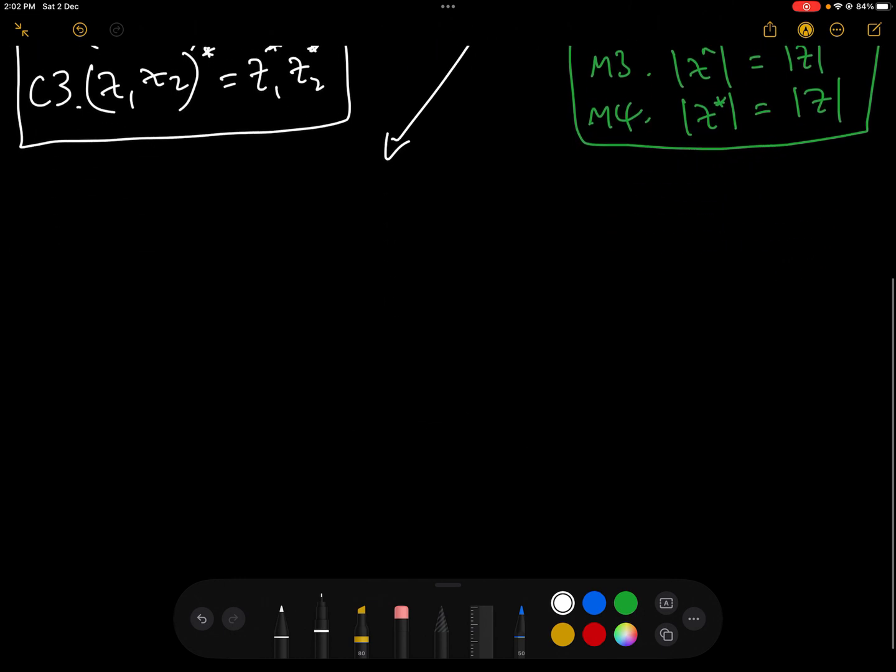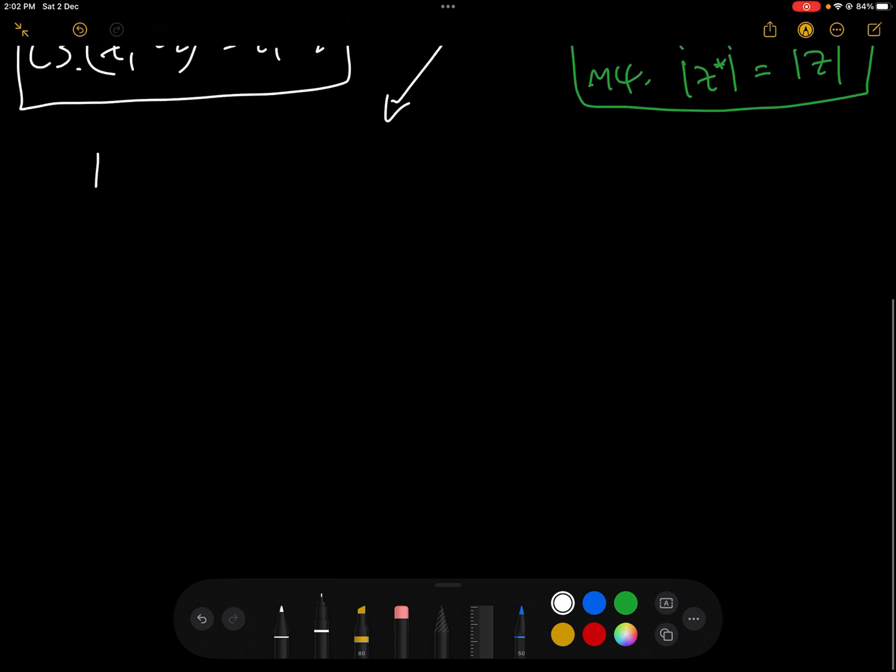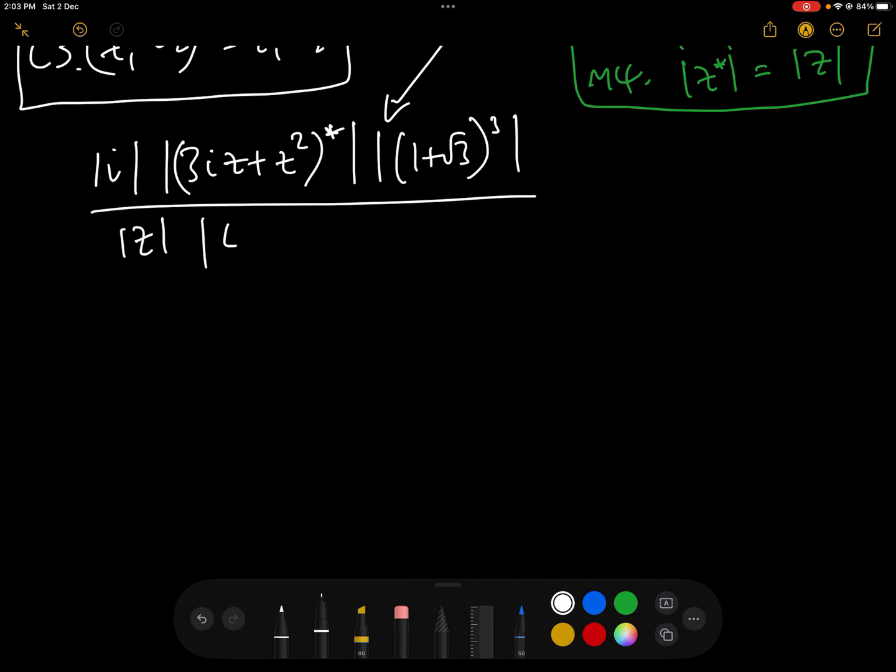So let's bring that down here so we've got a bit more space. So let's just rewrite that. That's modulus of i times 3iz plus z squared conjugate times the modulus of 1 plus root 3 cubed all over mod z, 4z conjugate minus 12i, mod 1 plus i squared. Okay, so let's deal with them each one by one.